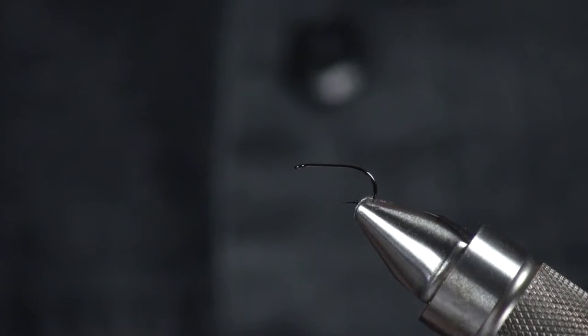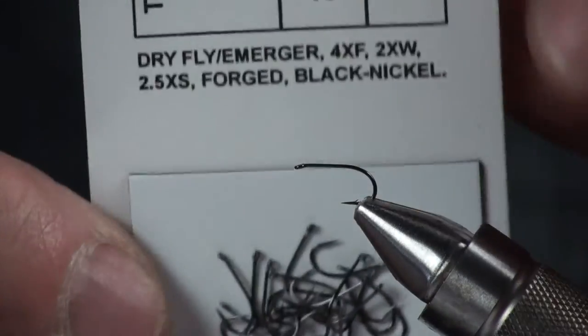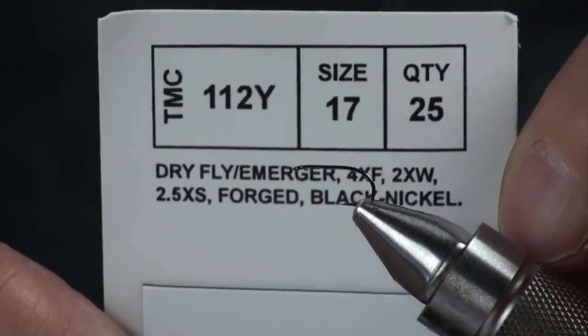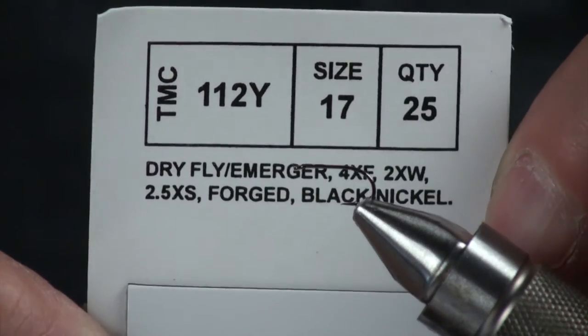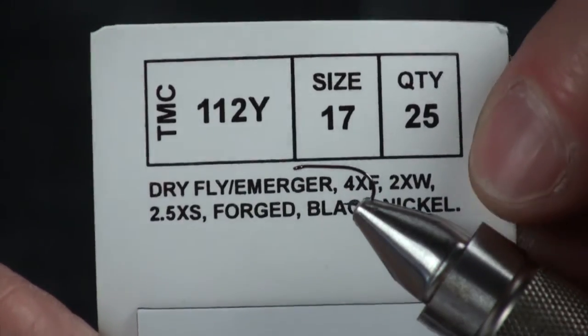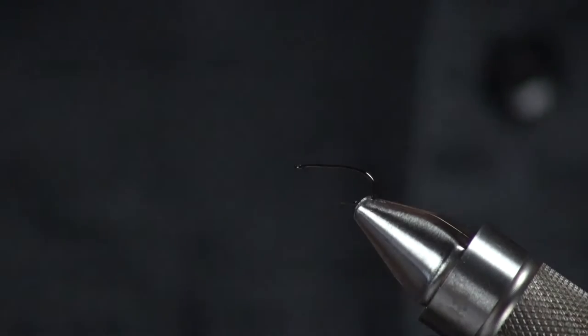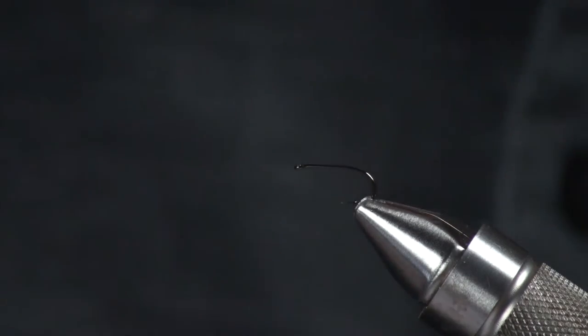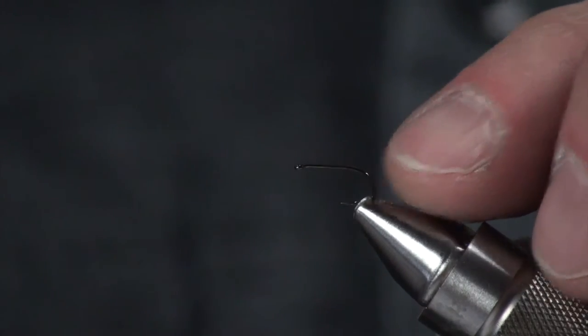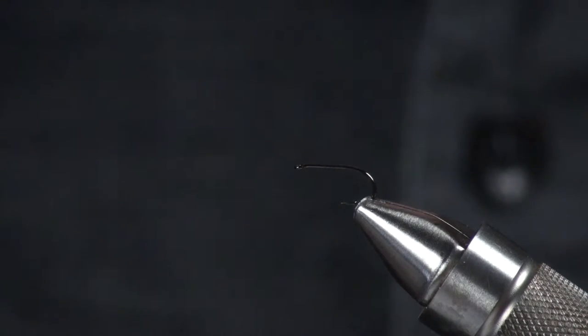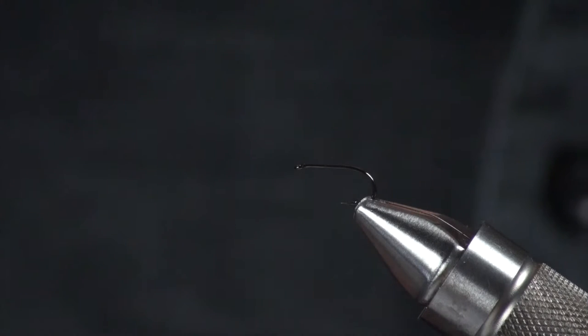First thing I'm going to do, we're going to use a cool new hook from Tiemco, it's called 112Y, and it's a black nickel hook. It's just a really sexy looking piece of iron, nice wide gap. The thread we're going to use, you can use anything black, I'm going to use a Danville 6-0. I really like the way this thread lays down nice and flat.